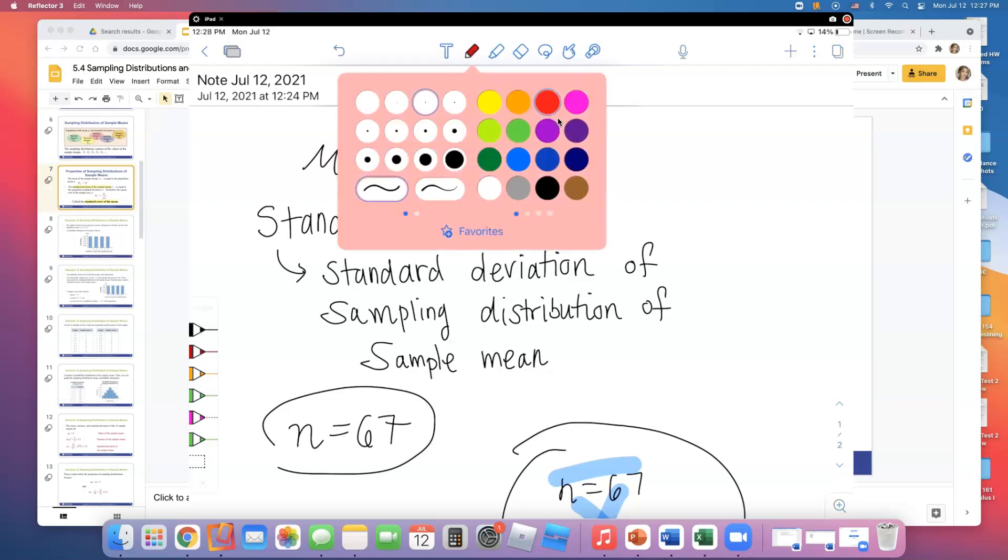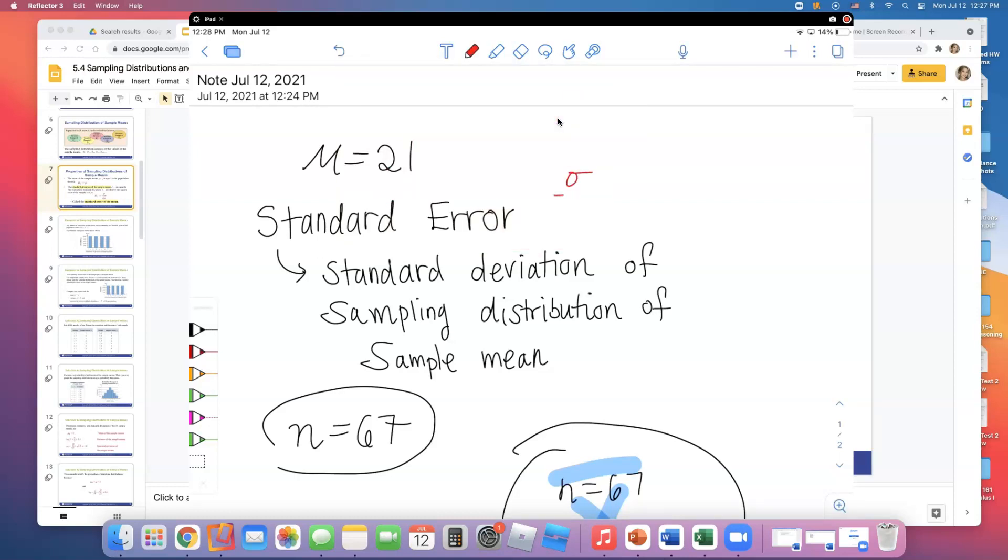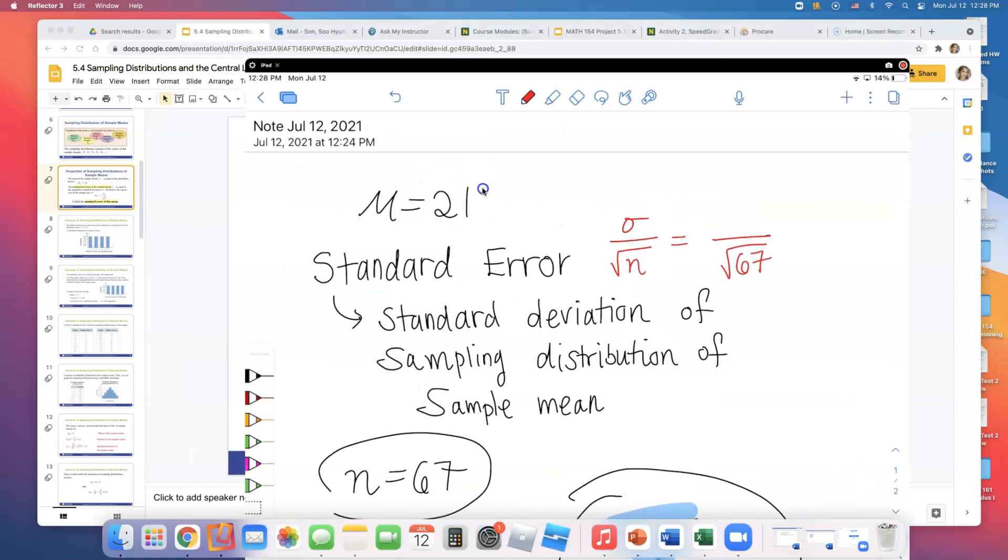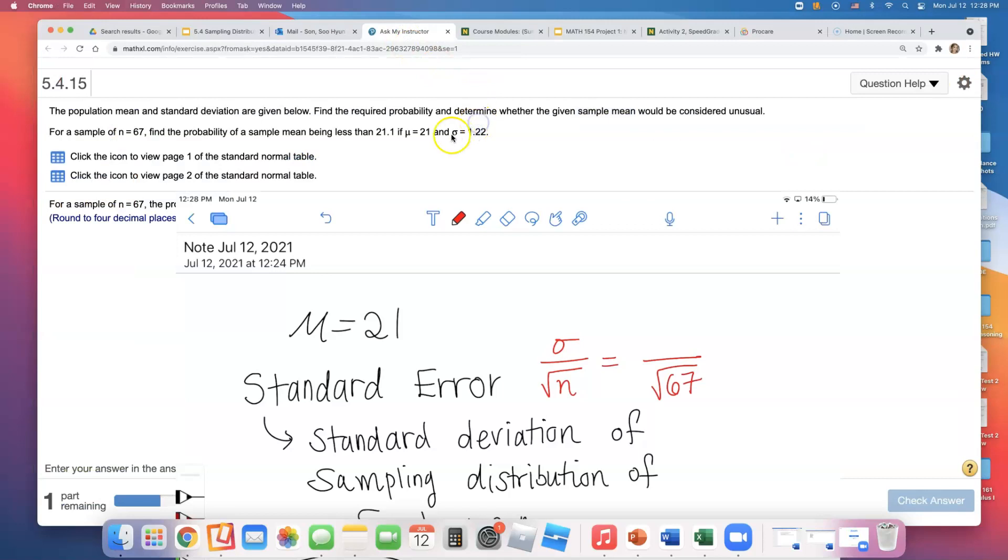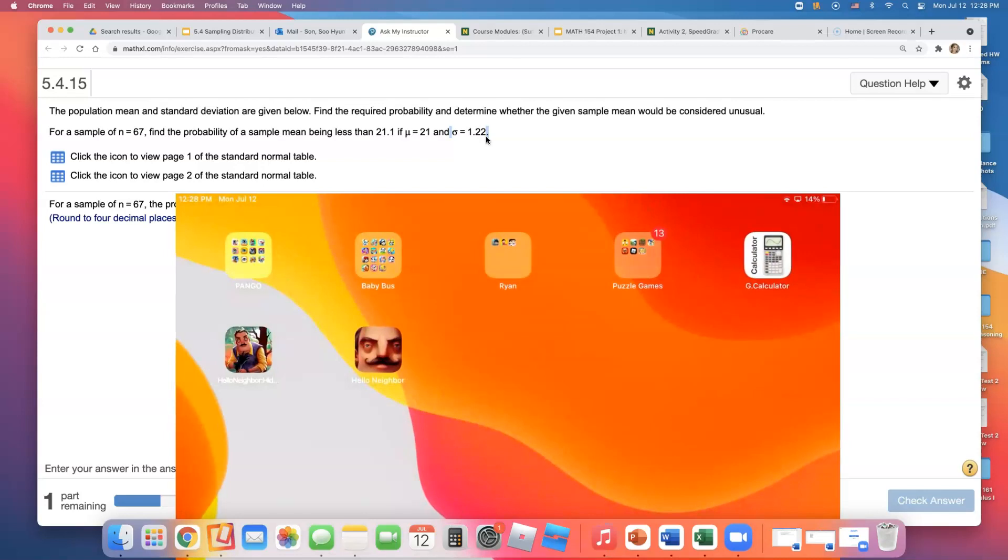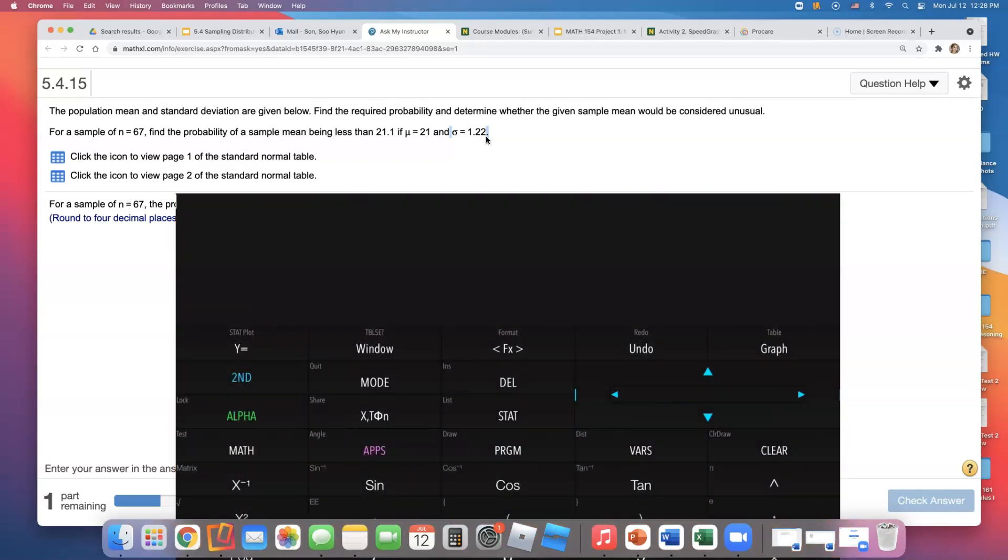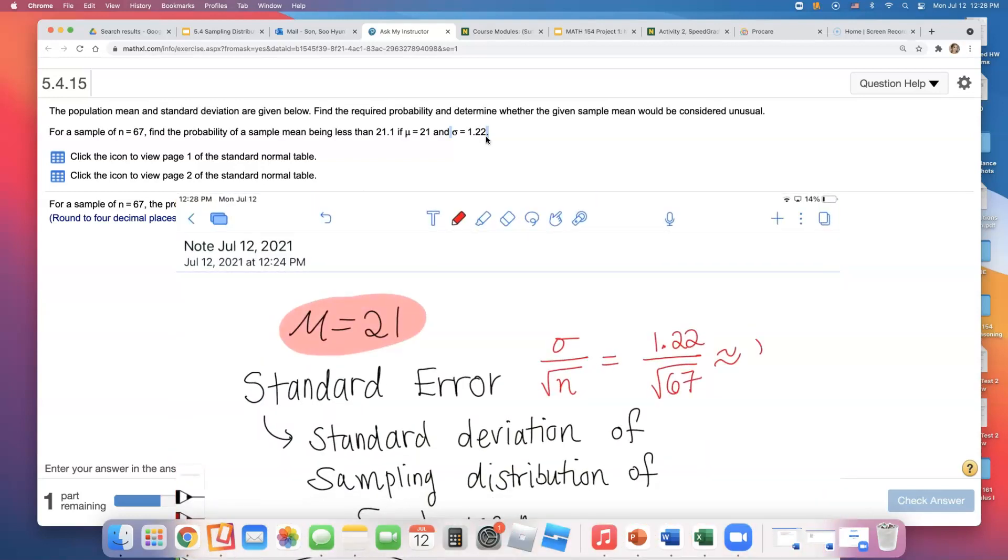What's the standard error going to be? Population standard deviation divided by square root of n. N was 67, and the population standard deviation is 1.22. So I'll type into a calculator: 1.22 divided by square root of 67. That gives 0.149.